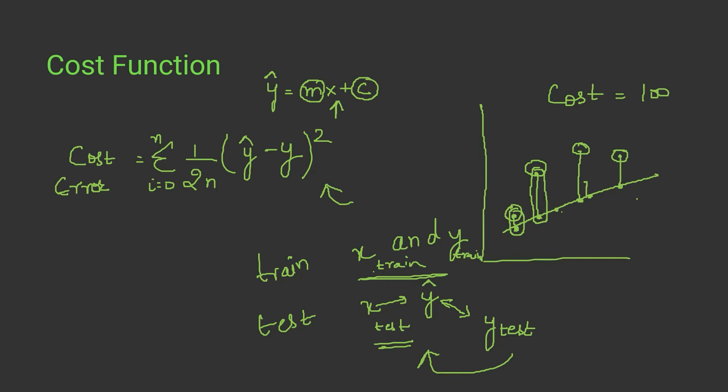Initially we have randomly given m and c values, but as we keep training our model, the hypothesis line adjusts to an optimal position where we have the most optimal values of m and c. By most optimal I mean the lesser the cost, the better the performance of the linear regression model. Our target is to decrease the cost value and find a best fit line so that the distance between the predicted value and actual output is least, enabling accurate predictions.